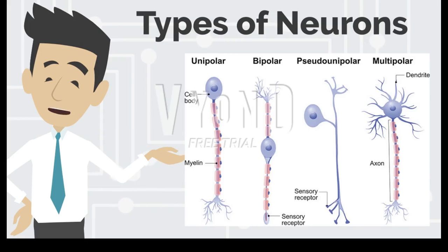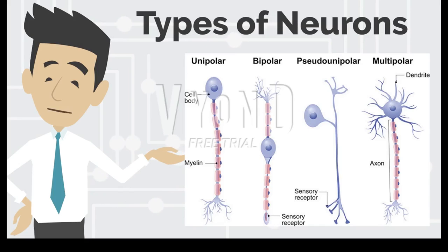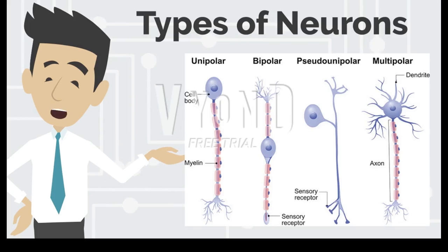They also have different functions throughout the body. The three functional types are sensory neurons, motor neurons, and interneurons. Sensory neurons are the nerve cells that are activated by sensory input from the environment. For example, when you touch a hot surface with your fingertips, the sensory neurons will fire and send signals to the rest of the nervous system.